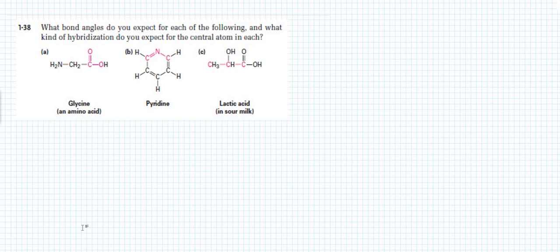In this tutorial we are going to solve a question about bond angles and hybridization. This question is from your textbook McMurray and it is one of the end of chapter questions. The question asks what bond angles do you expect for each of the following, and what kind of hybridization do you expect for the central atom in each. We will start from option A.